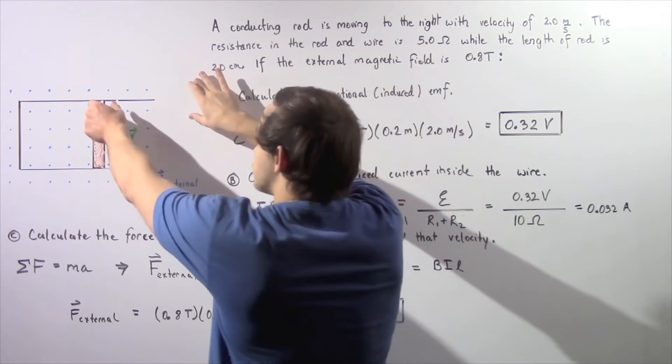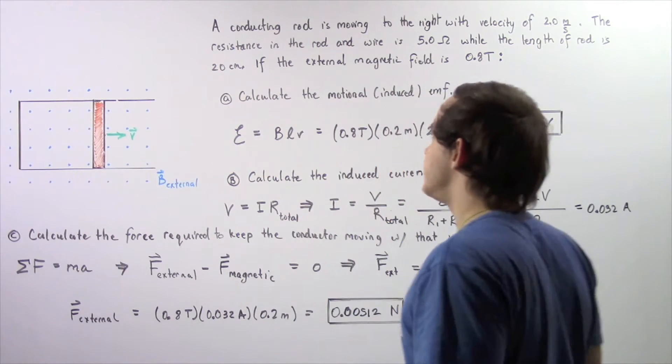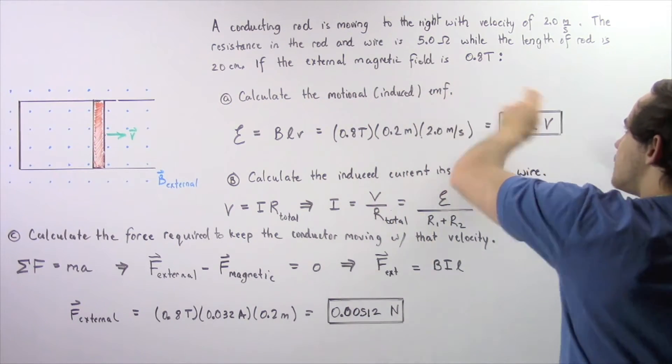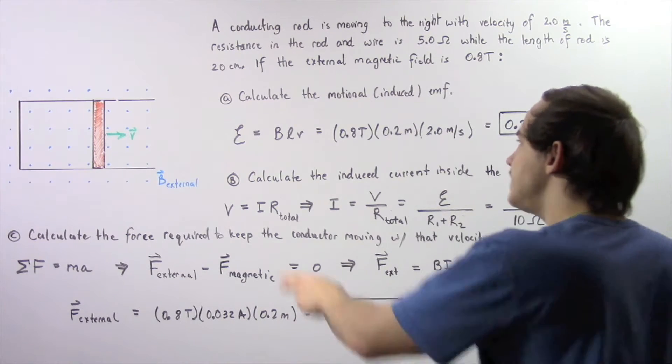So the length is 20 centimeters. If the external magnetic field is 0.8 teslas, in part A, calculate the motional induced EMF.